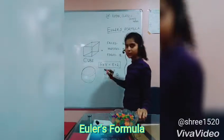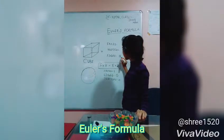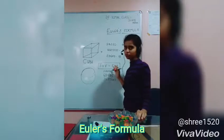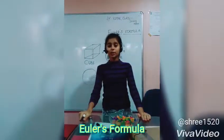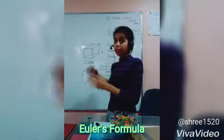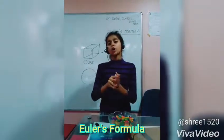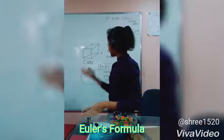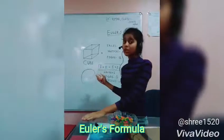For a cube: 6 plus 8 equals 14, and E equals 12, so 12 plus 2 equals 14. So 14 equals 14 — it is proved! Now, if you are given any figure with, for example, 20 faces, 10 edges, and 2 vertices, you can determine whether it is possible to make a 3D figure from those values using Euler's formula.